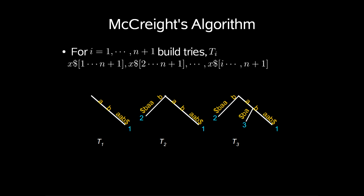So t_1, t_2, and t_3 are shown as examples below here. Now, for i equals n plus 1, t_i is the suffix tree for x. The essential trick is being clever in how we insert x[i...n] into t_i so we don't spend order n squared all in all.